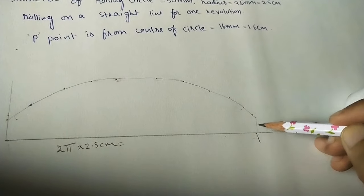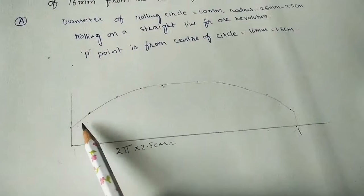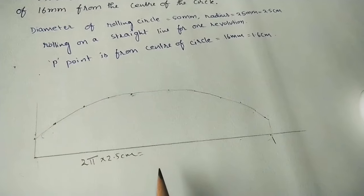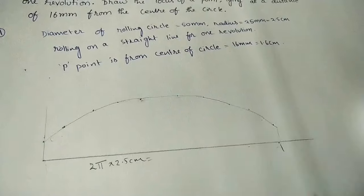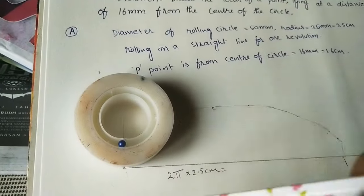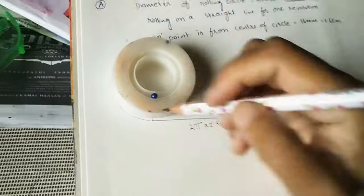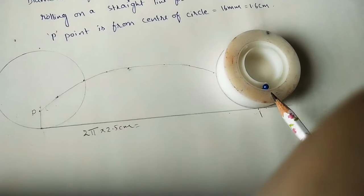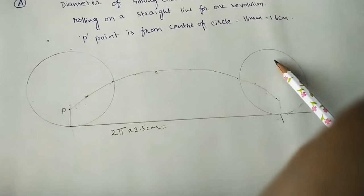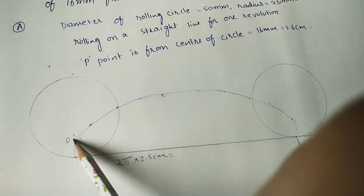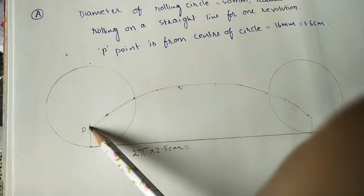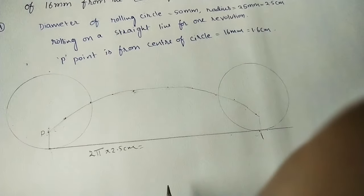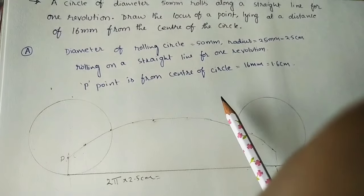This curve is called a trochoid. Since the P point is inside the circle, it is called an inferior trochoid. The same circle rolls from one end to the other, with P always at 16 mm from the center inside the circumference.